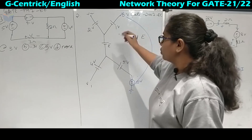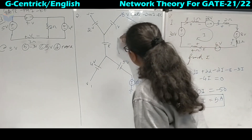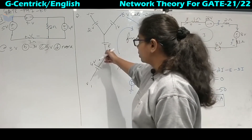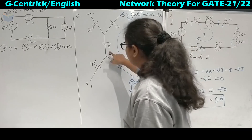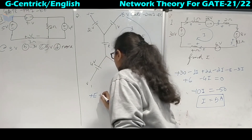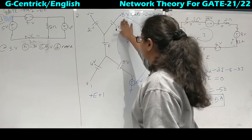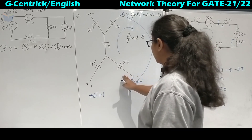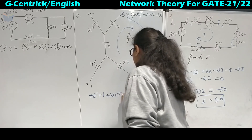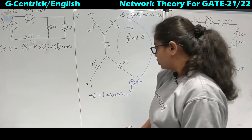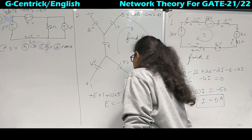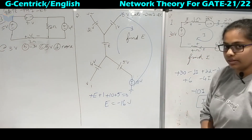Taking the direction of current and applying KVL: current leaves the positive terminal, so plus E, then plus 1 volt, then plus 10 volts, then plus 5 volts, equal to zero. So E plus 16 equals zero, giving E = minus 16 volts.